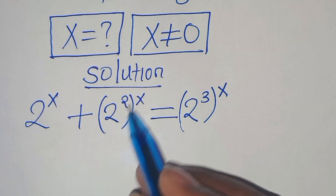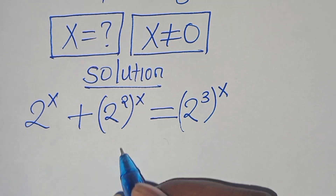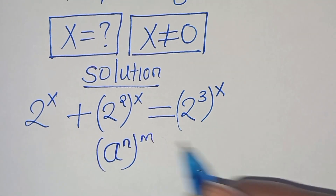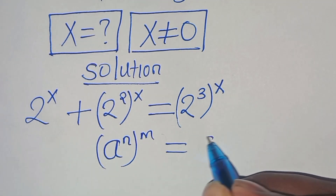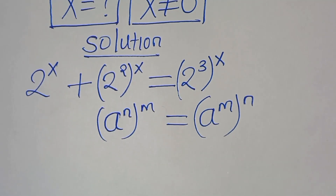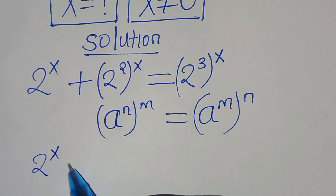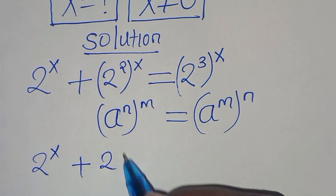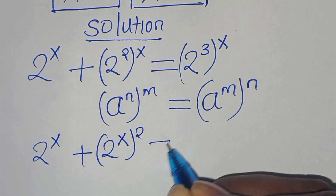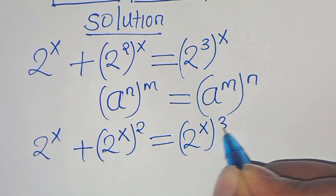The next step is that 2 to the power of 2 raised to the power of x, and 2 to the power of 3 raised to the power of x, this is in the form of a to the power of n raised to the power of m, which we can express as a to the power of m raised to the power of n. So let's apply this exponent property so that we have 2 to the power of x plus 2 to the power of x raised to the power of 2, this is equal to 2 to the power of x raised to the power of 3.